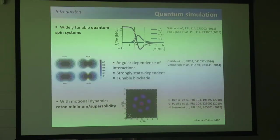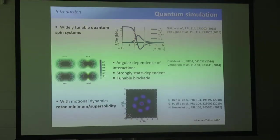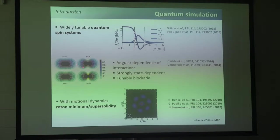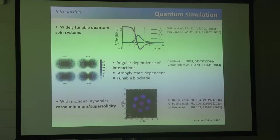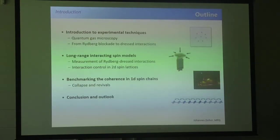There are further applications in the realm of quantum simulation. You can realize widely tunable spin systems where finely tuned interactions or interaction potentials can be used. They can also be used for looking at other spin models. There's just a P-state in general, there's anisotropic blockade, so you can realize anisotropic models. And if you push the dressing to a regime where you combine it with motional dynamics, you might see density ordering or even something supersolid, as has been proposed for 2D systems.